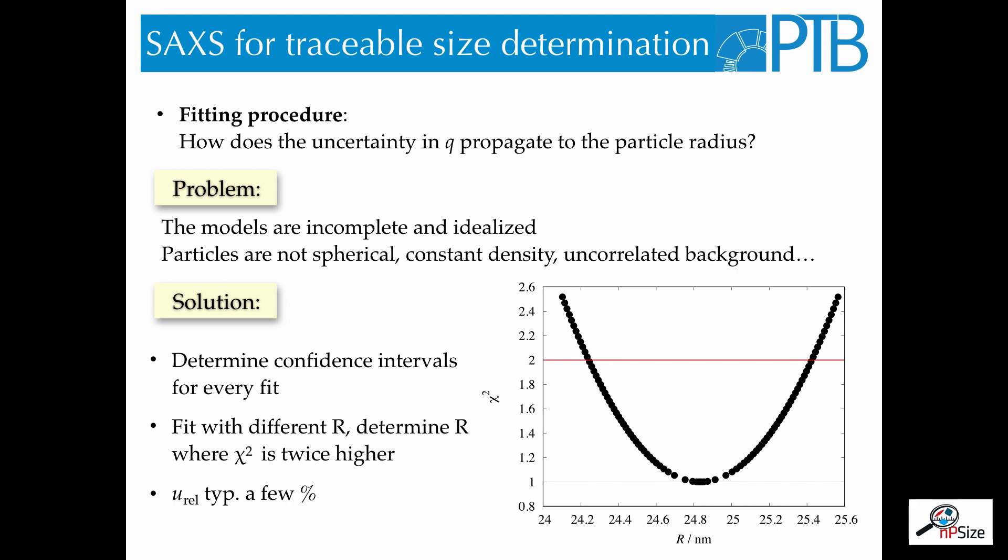For example, the particles are not perfectly spherical, they may not have a perfect constant density, but there can be some background in the scattering. And therefore, we need to determine how the uncertainty of the q-axis propagates to the particle radius.